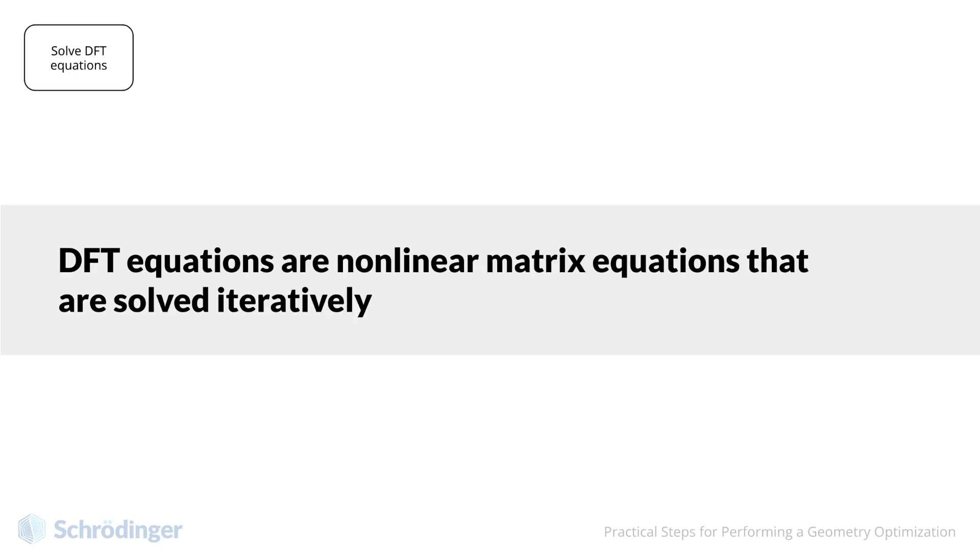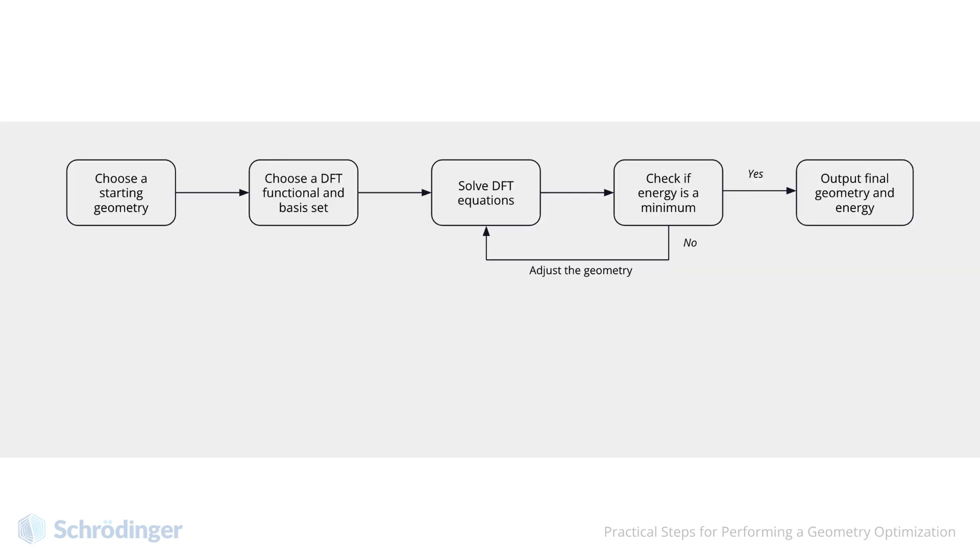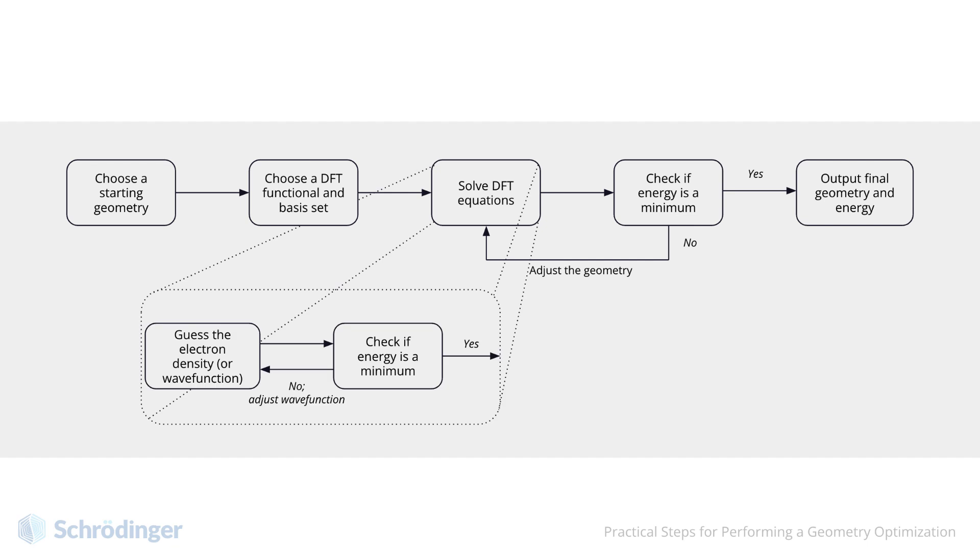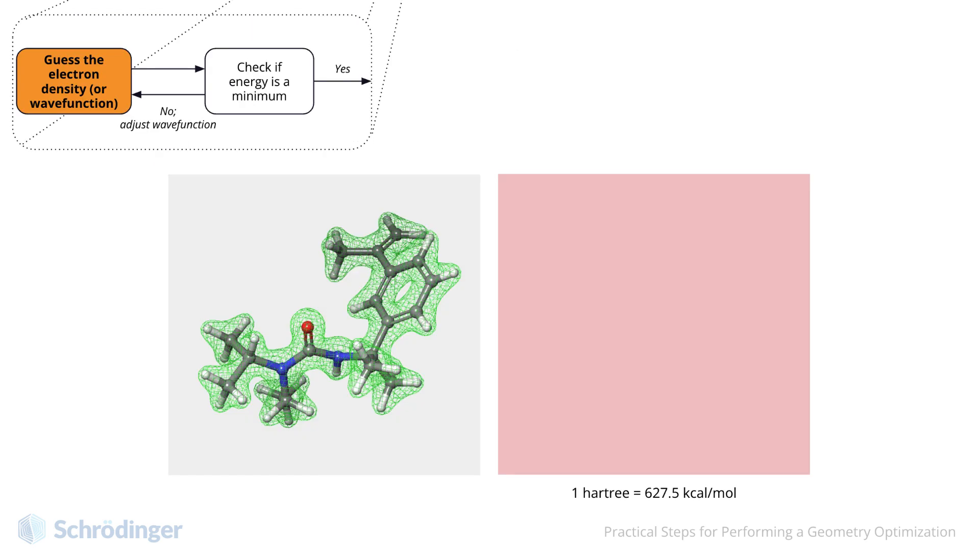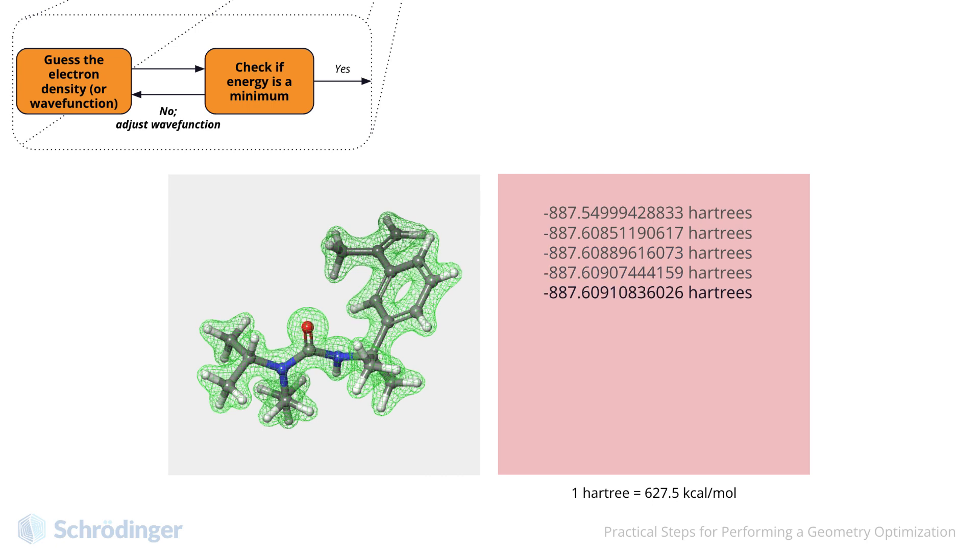DFT equations are non-linear matrix equations that are solved iteratively. Recall that in the geometry optimization, each step we adjust the geometry and try to minimize the energy as a function of geometry. Here, at a fixed geometry, we are iteratively adjusting the electron density so as to minimize the energy with respect to the density. Thus, we can think of this iterative process as being inside of the solve DFT equation step in our simplified workflow. Specifically, we need to start with some reasonable guess for the electron density or the wave function. Often, a reasonable initial guess is a sum of the atomic densities for each individual atom that exists in the molecule.